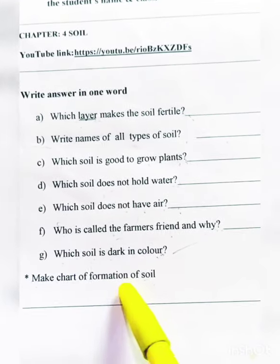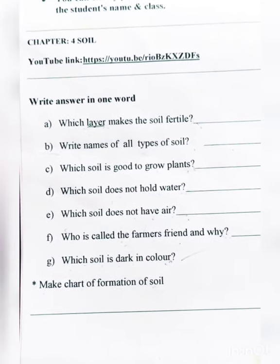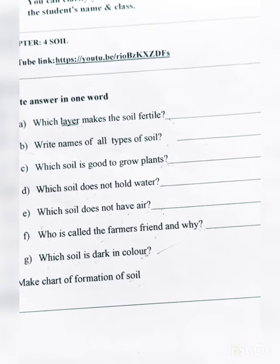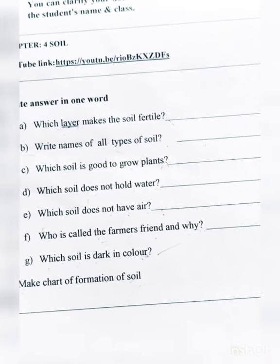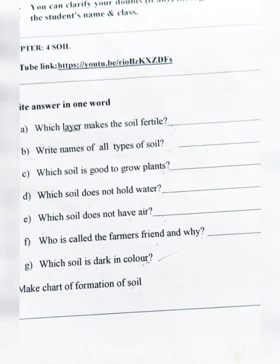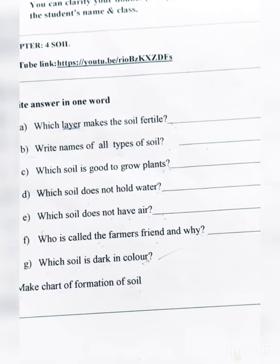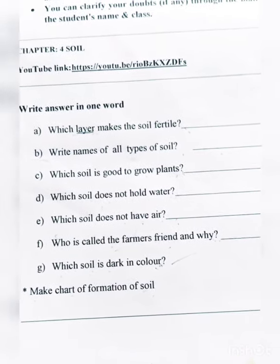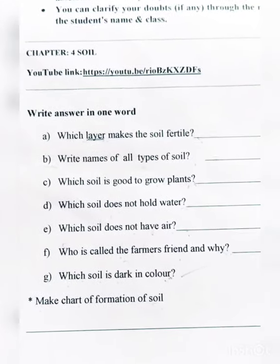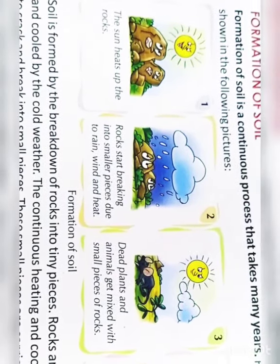Make a chart of the formation of soil. You have to show how soil is formed through the weathering process. First, rocks are broken down by heat and cold. Then small plants grow in the spaces, and animals divide rocks into smaller pieces, which eventually form soil layers. You can see this formation of soil and show it on a chart paper.